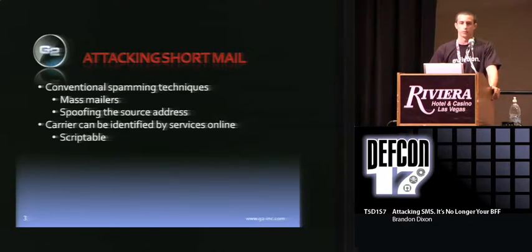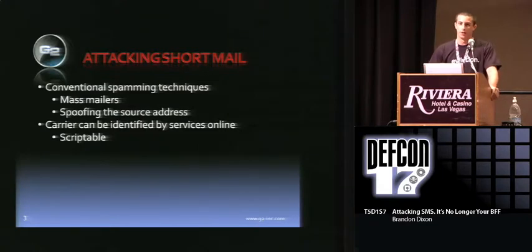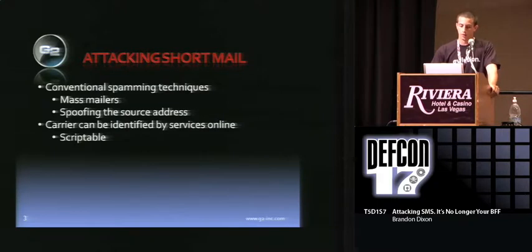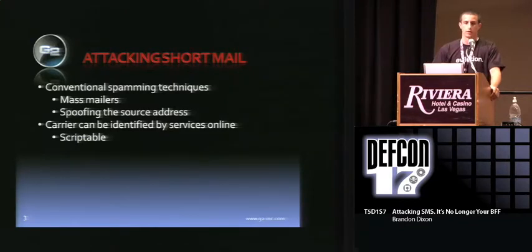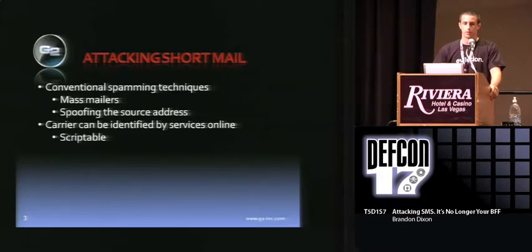From some of the carriers I've talked to, they don't actually concern themselves with the source because they're more concerned with the content. An average user getting a message from, say, president at the White House — if it looks real, they're more than likely going to believe it. So it adds another ability to actually do phishing. It's another attack vector. The carrier can be identified by services online, and it's completely scriptable. You can actually go to several form-based sites, write a parser to go through the site, input the user's number, and fairly accurately generate a list of all the victim numbers you want and the respective carriers they're associated to.